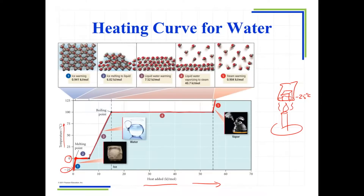Once it's all melted and there isn't any more ice — it's all just a puddle in the bottom of that beaker — then the heat going in is going to be warming that water up. All the thermal energy going in is warming it up until it all gets up to 100 degrees Celsius. At that point, it'll start boiling. There's going to be some evaporation happening all along as soon as you get some liquid water in there, but the boiling takes place when it gets to its boiling temperature.